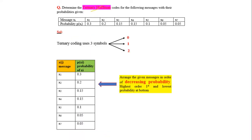In this tutorial, I will explain ternary Huffman coding with some examples. Determine ternary Huffman codes for the following messages with their probabilities given. This ternary Huffman coding is also known as 3-ary coding. Here 7 messages are given along with their associated probabilities.